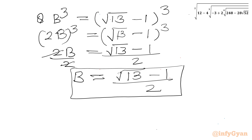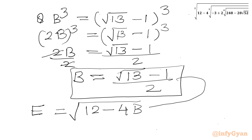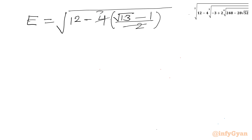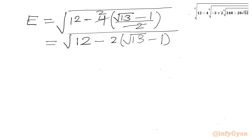Let us apply this value of B in our expression. E was square root of 12 minus 4B. Substituting B = (√13 − 1)/2: E = square root of (12 − 4 × (√13 − 1)/2) = square root of (12 − 2(√13 − 1)) = square root of (12 − 2√13 + 2).